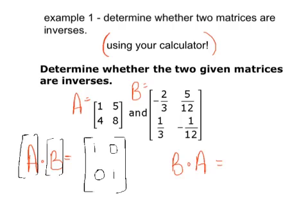Then multiply them again in the opposite order. Your answer is the identity matrix again. So yes, those two given matrices are inverses of each other.